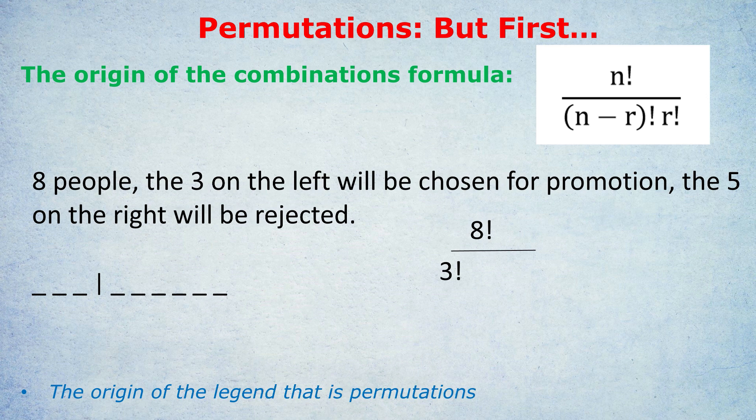But what about the N minus R factorial? Well, same thing goes for the people being rejected. Those five people being rejected, D, E, F, G, H, they could come in a different order, D, F, E, G, H, and they'd still be rejected.